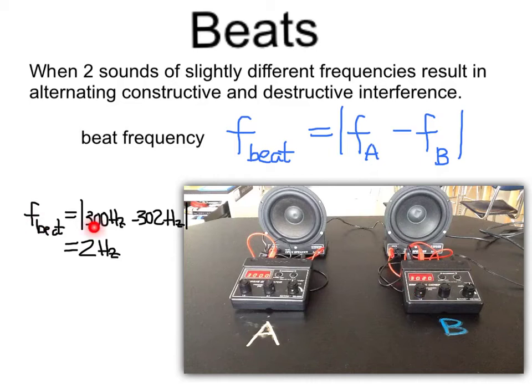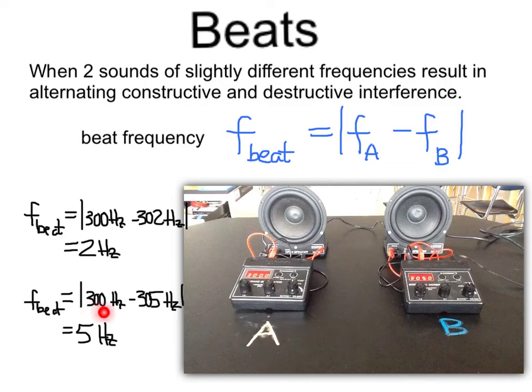Well, that beat frequency would be the difference between 300 and 302 Hz and result in 2 beats per second or a beat frequency of 2 Hz. Let's see if we increase the frequency to 305 Hz in the speaker on the right. As you can hear, the number of beats increased, and we can calculate that again by taking the difference in frequencies. So this difference in 300 to 305 Hz gives us 5 beats per second or a beat frequency of 5 Hz.